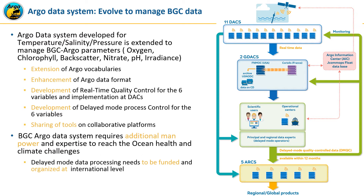The Argo data system developed for pressure, temperature, and salinity has been extended to manage BGC parameters: oxygen, chlorophyll, backscatter, nitrate, pH, and irradiance. The Argo vocabulary has been extended and the data format enhanced to manage the BGC variables. Real-time quality control procedures have been developed for all six variables and implemented in the 11 DACs.